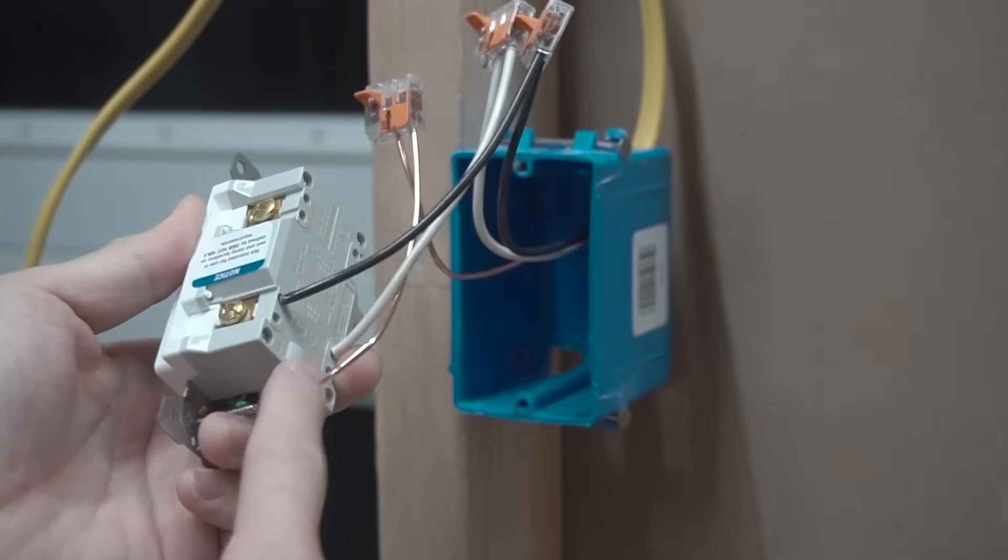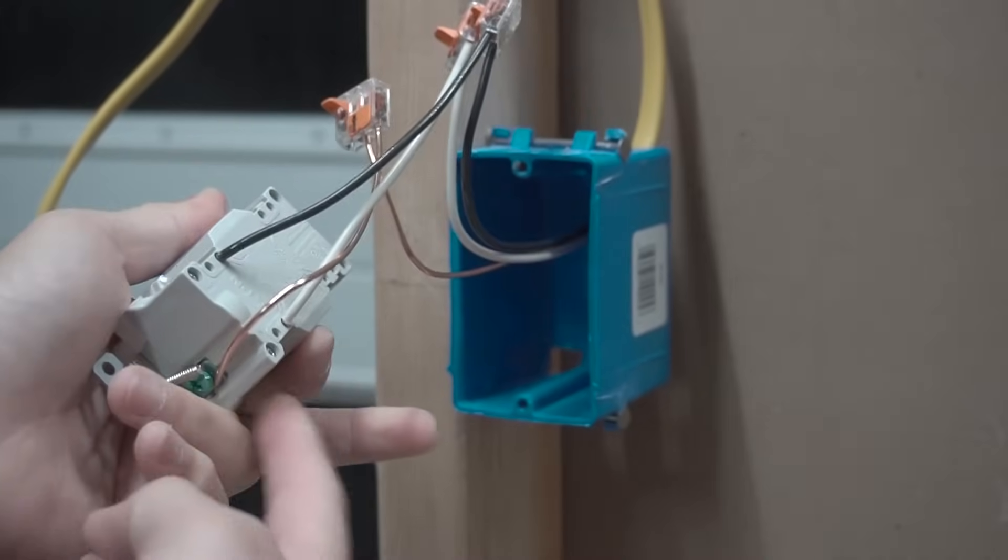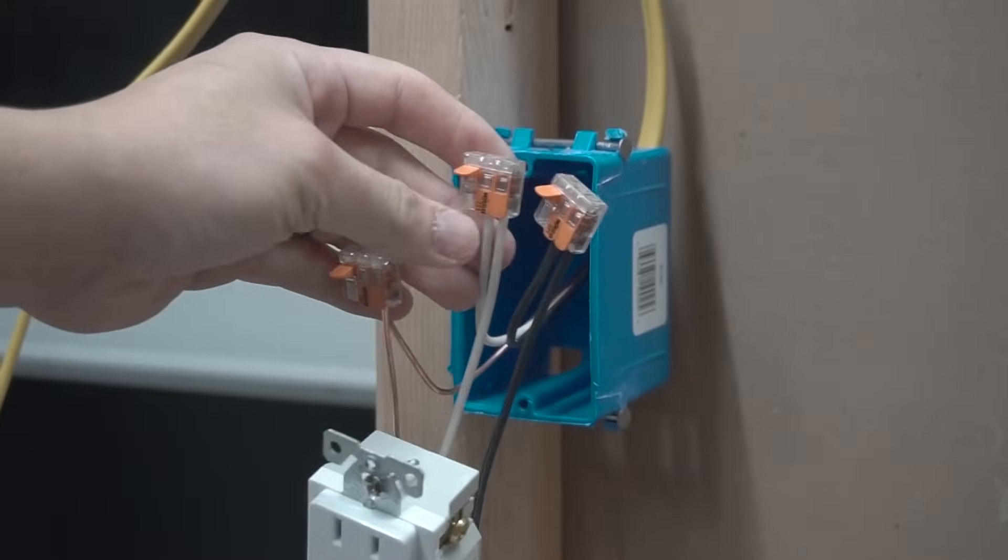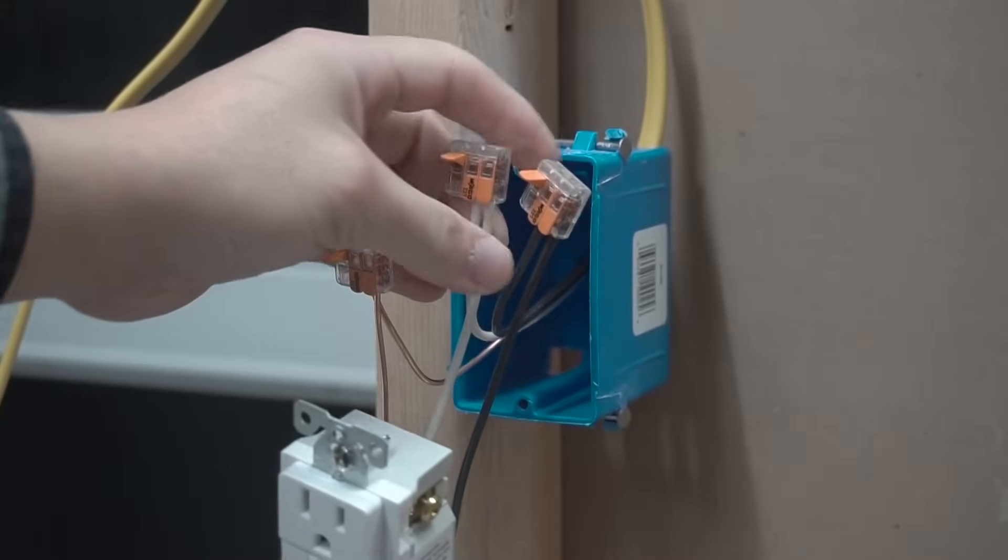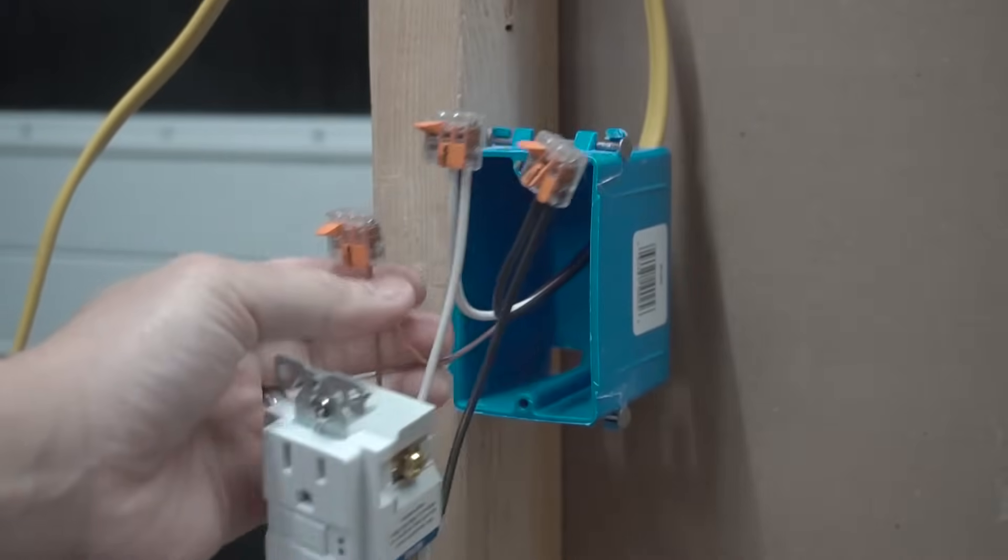We have our hot on the brass, neutral on the silver and our ground. And we connected that neutral on the neutral of the power source and the hot of the power source and connected the ground as well. With that being said, let's introduce our second wire that's going to be going to this J-box, connecting to the second J-box.